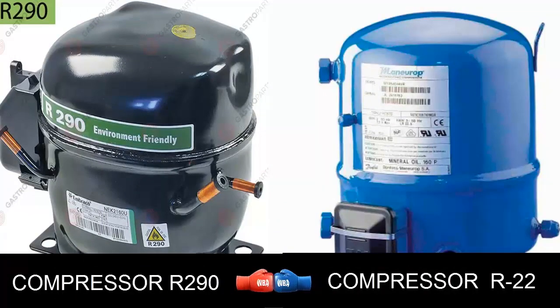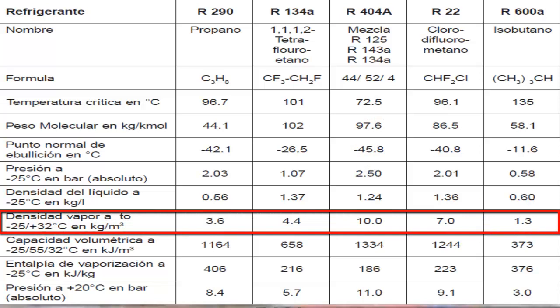The molecule of R22, in a vapor state, is heavier than that of R290. Therefore, with a slight increase in the volume of gas passing through the compressor, several grams of R22 will be transported. Although R22 is less efficient in cooling compared to R290, the greater quantity of grams passing through the compressor allows for sufficient cooling of the product.